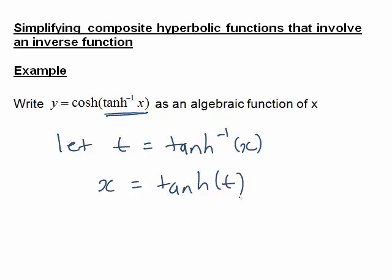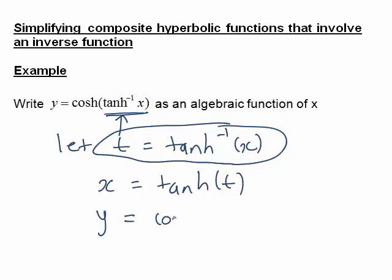This is helpful because the substitution t equals inverse tanh of x allows us to write y as cosh of t. Then what we need to do is find some sort of hyperbolic function identity that relates cosh of t and tanh of t.